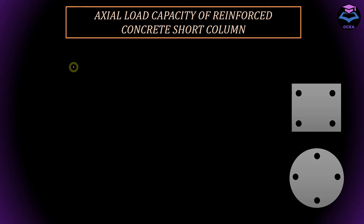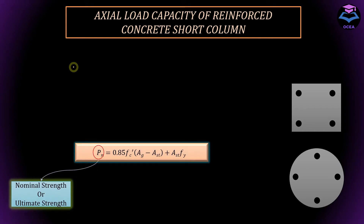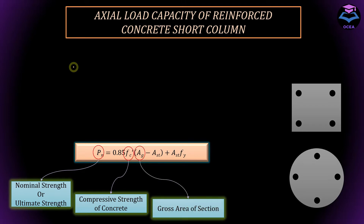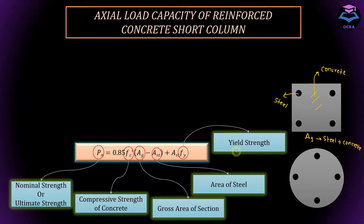So how can we calculate the axial load capacity of a short reinforced concrete column? We can use this equation where Pn is the nominal or ultimate strength of the short reinforced concrete column, fc prime is the compressive strength of concrete, Ag is the gross area of the section which is the total area including both steel and concrete, Ast is the area of steel, and fy is the yield strength of steel. The equation is formed because we have two materials — steel and concrete — so the axial load capacity is basically the summation of the strength of each individual material at failure.